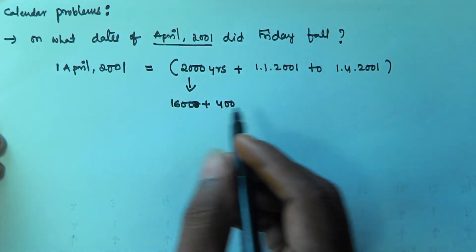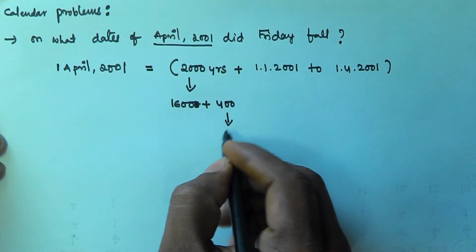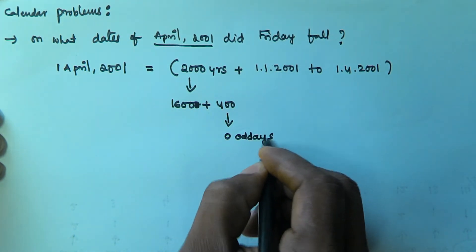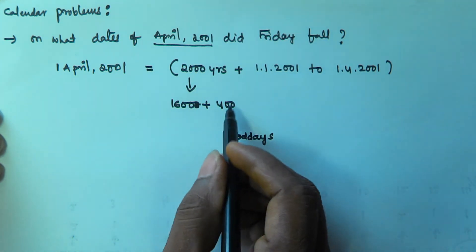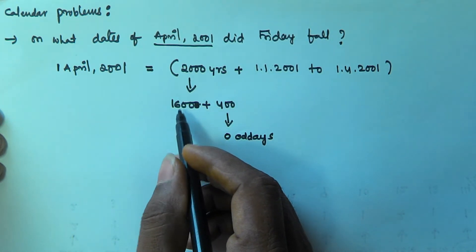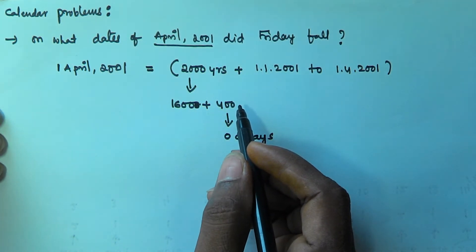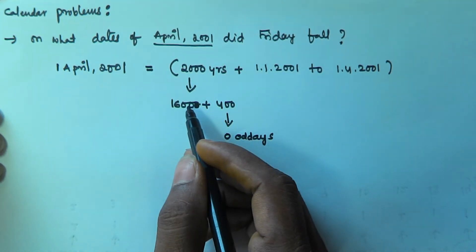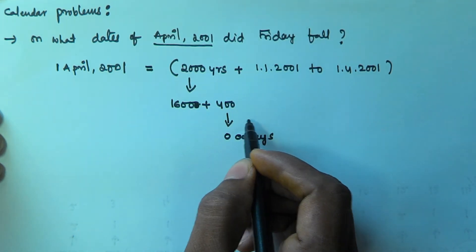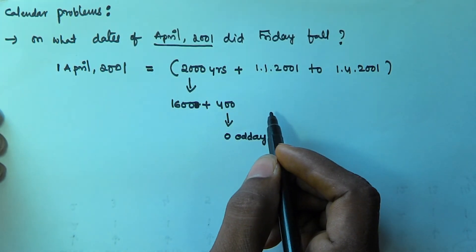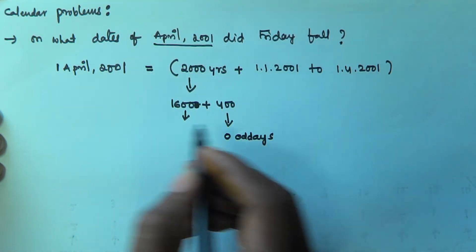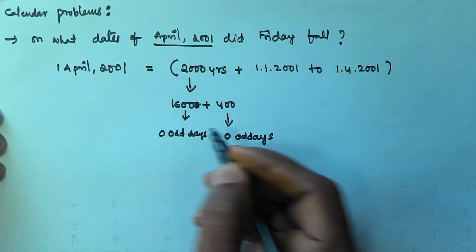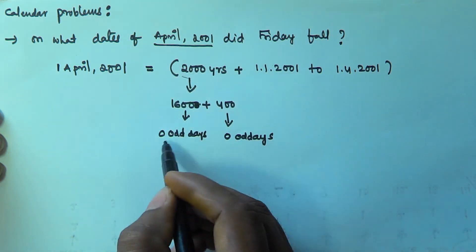In the first video I told you that 400 years will contain 0 odd days. In the same manner, any multiple of 400 will also contain 0 odd days — that is, 400, 800, 1200, 1600, and 2000 years will all contain 0 odd days. So 2000 years contains 0 odd days.